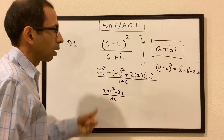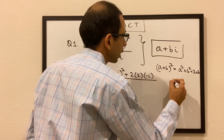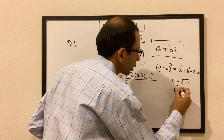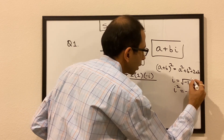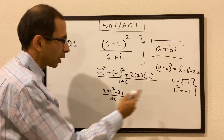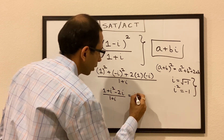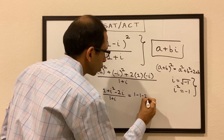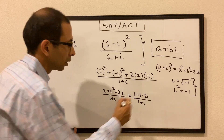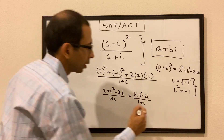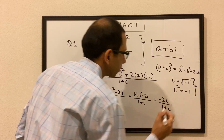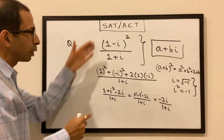Now we know by definition that i is the square root of negative 1, and i² is negative 1. So plugging that in: 1 - 1 - 2i divided by (1 + i). The 1 and -1 cancel, leaving us with -2i over (1 + i).